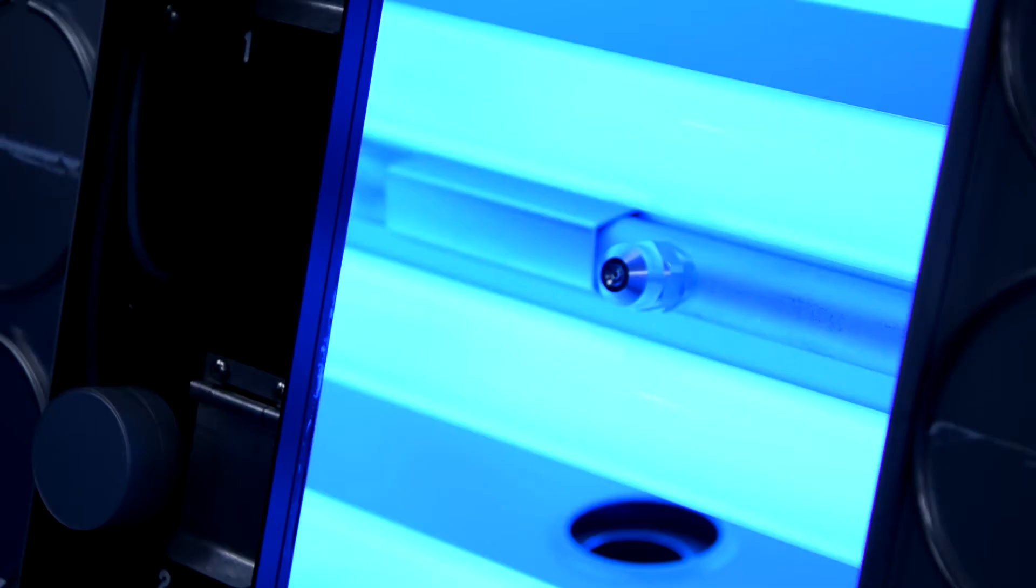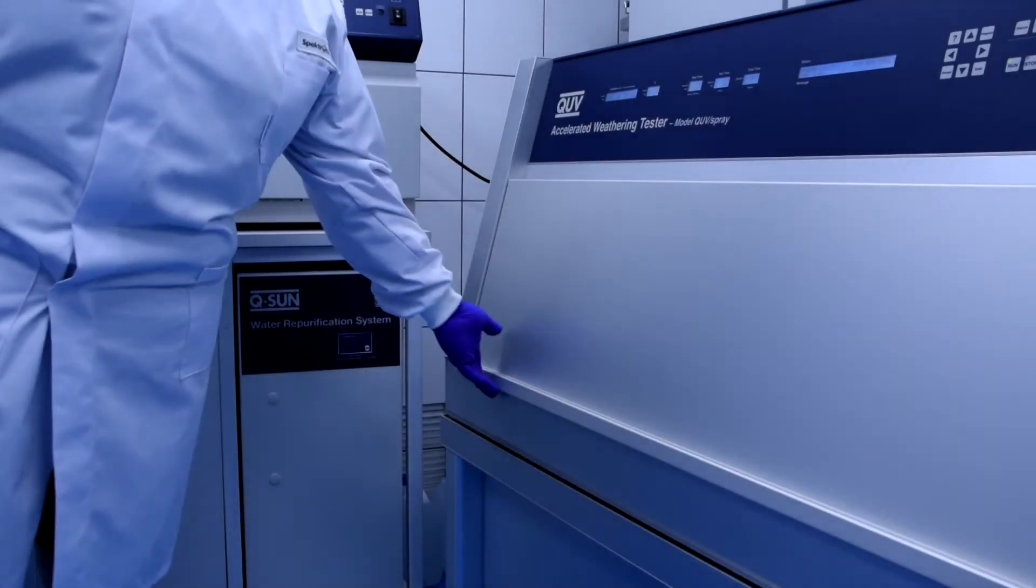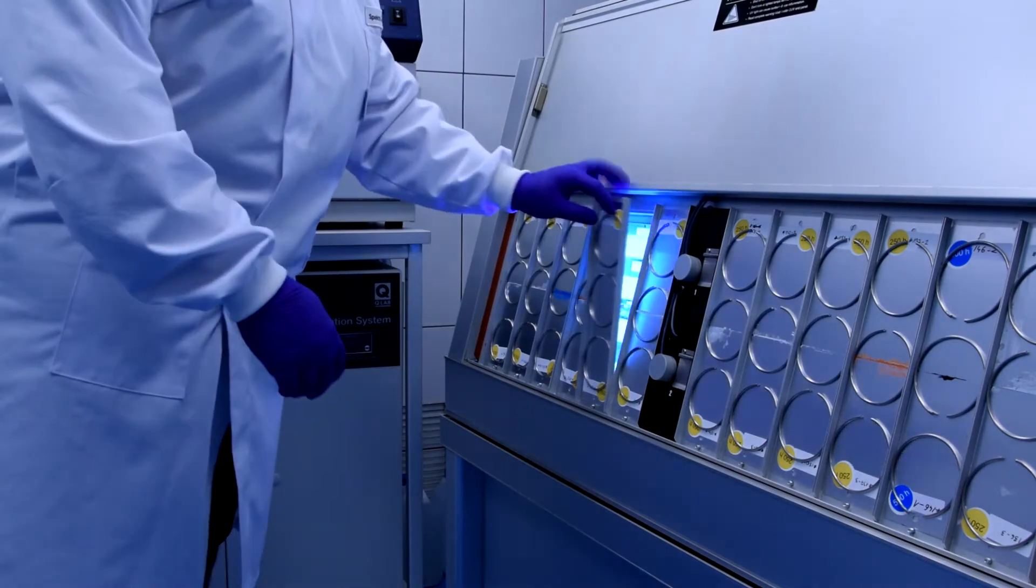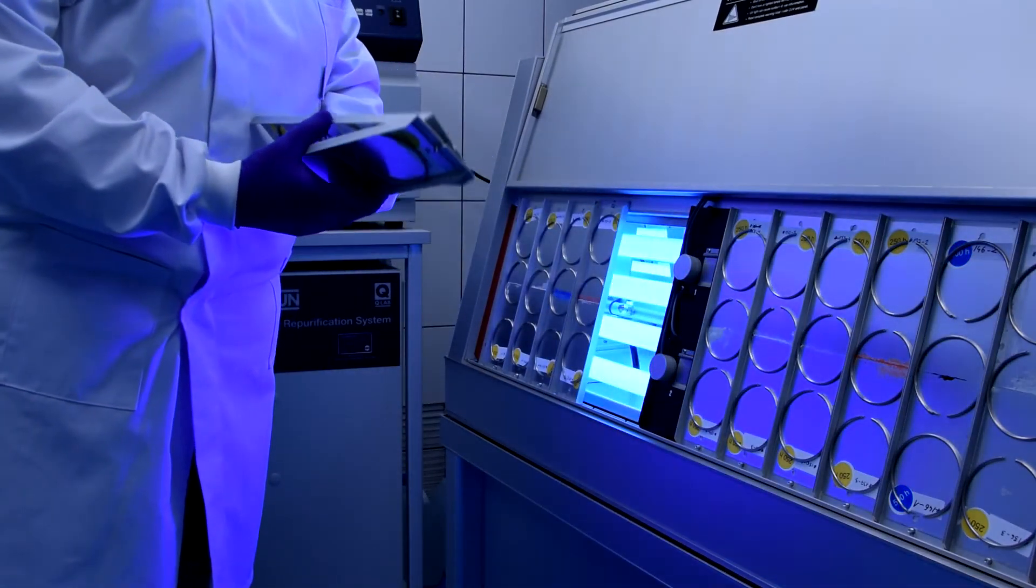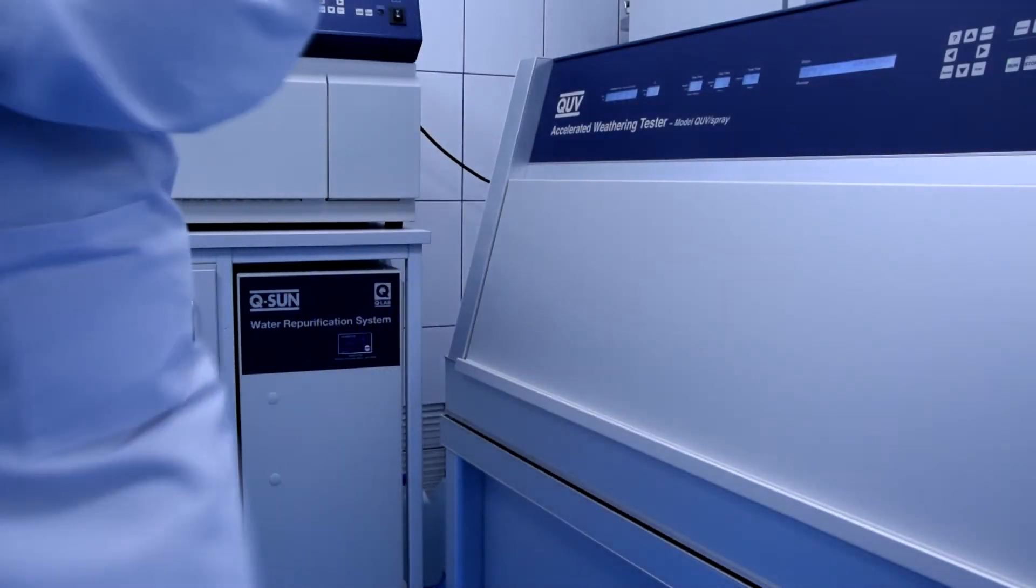In terms of tests in the UV Chamber, we use UVA 340 lamps for general tests, UVA 351 lamps for simulating UV radiation through window glass, and UVB 313 lamps for testing the most performance coatings.